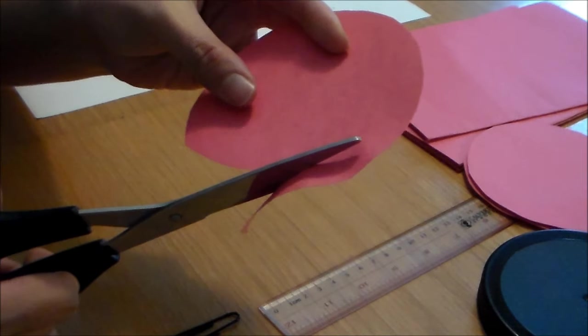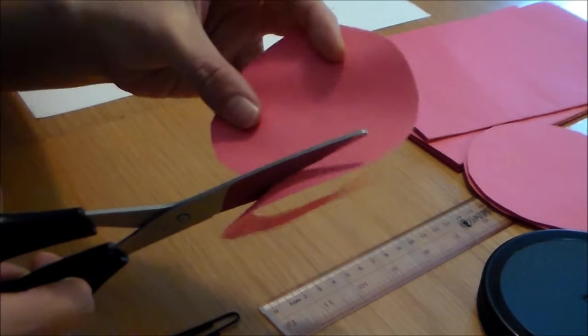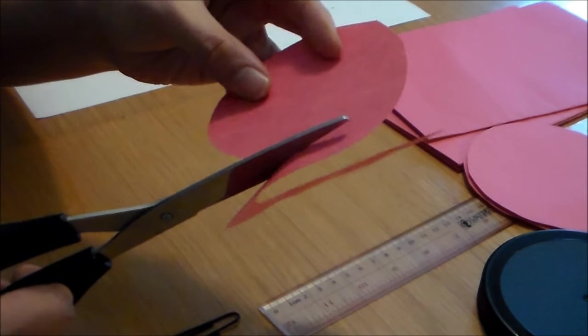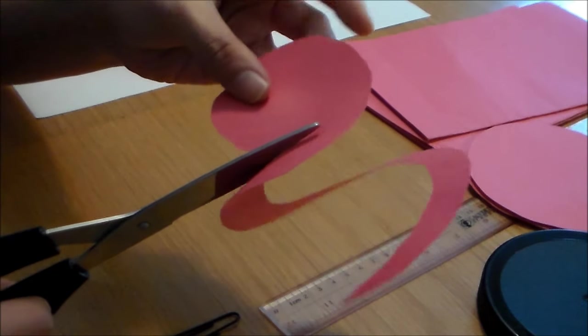And cutting this way will give your flower a more tapered look. Like I said, you can draw your spiral in on the paper before you cut or you can just do it like this and eyeball it.